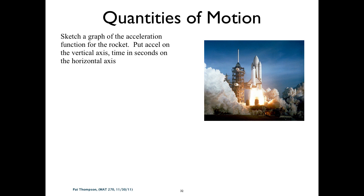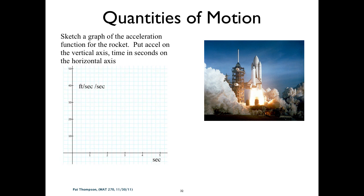We want the acceleration graph of the rocket — acceleration on the vertical axis, time on the horizontal axis. It's a horizontal line, right? This is just constant acceleration of 30 meters per second per second.